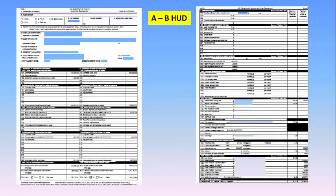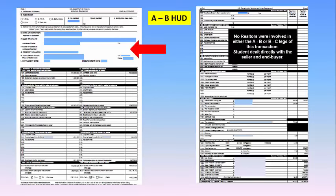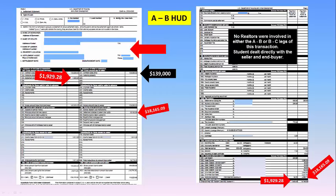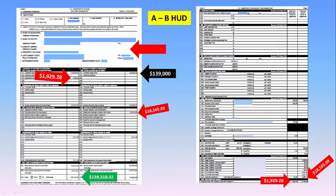This is the A to B HUD statement. The left hand side is the front page or page 1, right side is page 2. I've taken off all the players in the game so no one is embarrassed. This is the purchase price, $139,000. These are the expenses, both on the first page and recorded from the second page, that the buyer — the student — had to pay for the closing. Buyers are always on the left, sellers are always on the right side of the HUD. This is the net amount that the student buyer had to come up with to close this transaction: $139,318.02.